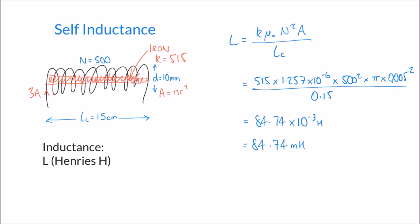Finally, we can calculate the energy in the inductor using E equals L times I squared over 2. In this case L is 84.74 times 10 to the minus 3.